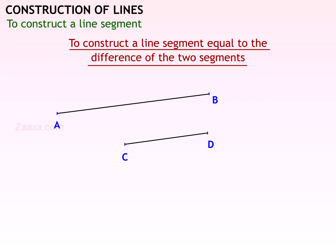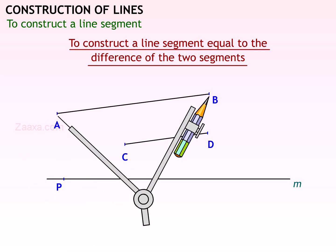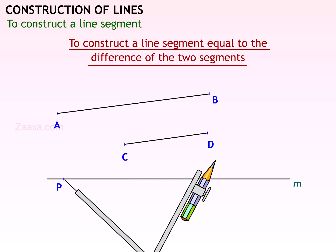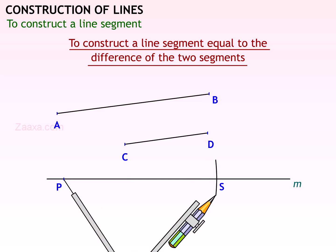To construct a line segment equal to the difference of two segments: two line segments AB and CD are given. You need to construct PQ whose length is equal to AB minus CD. Draw a line and mark a point P on it. First measure the longer line AB with the compasses, draw an arc from P, and mark the point S. PS is equal to AB.